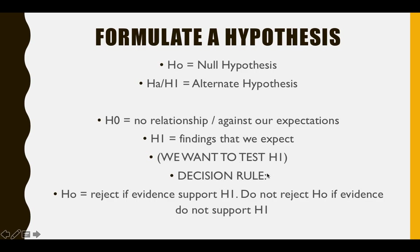The decision rule is that we reject H0 if evidence supports H1. But we do not reject H0 if evidence does not support H1. So it is either we reject H0 or we don't reject H0.